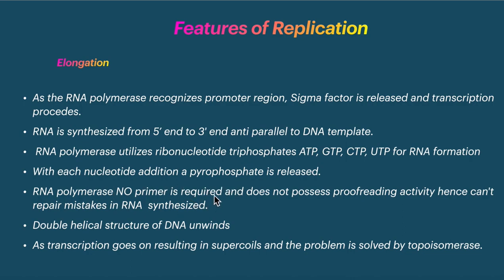RNA is synthesized in the 5' to 3' direction, same as DNA replication. However, RNA polymerase lacks proofreading activity — there is no exonuclease or endonuclease proofreading. So if an error occurs during RNA synthesis, repair is not possible, but since RNA is transient, this is not very dangerous.